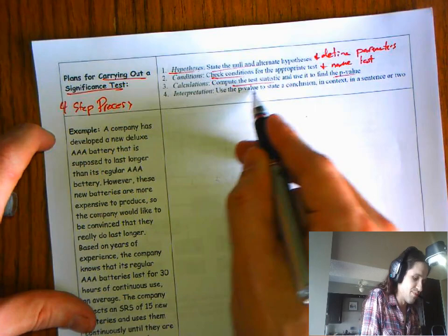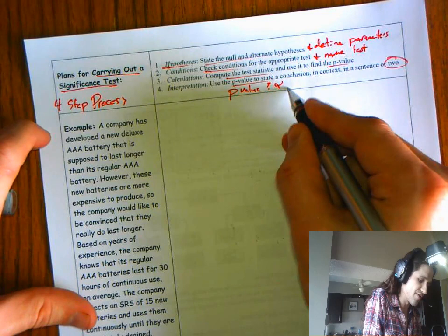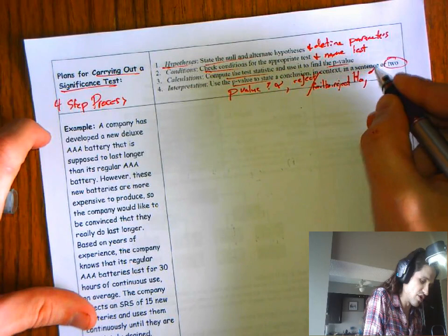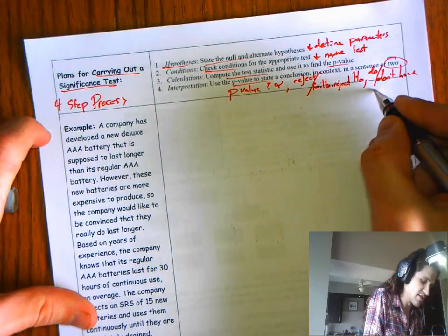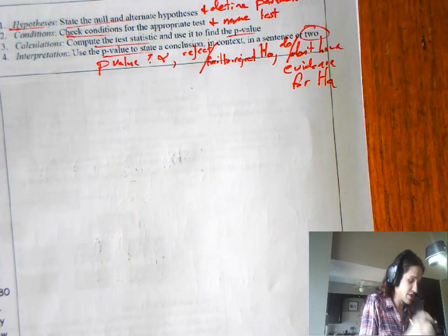We're going to do two. We're going to compare p-value to alpha. We're going to compare it to alpha. We're going to reject or fail to reject the null hypothesis. And we're going to say that we do or don't have evidence for the alternative hypothesis. So let me zoom in on that.